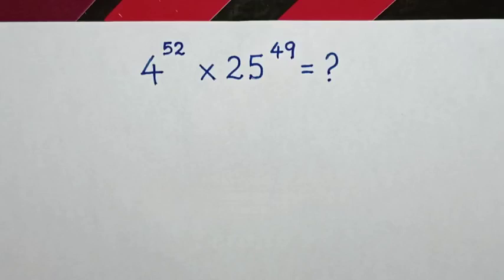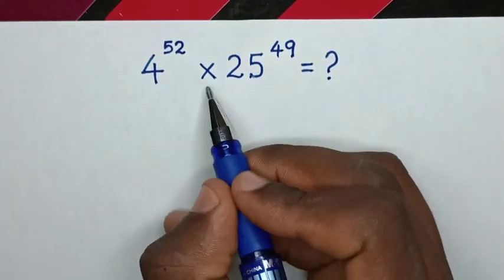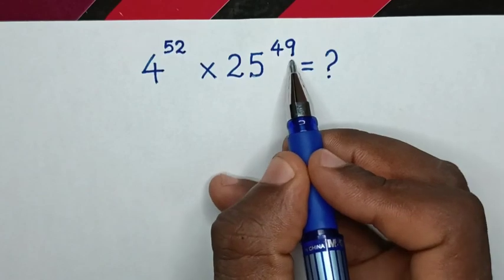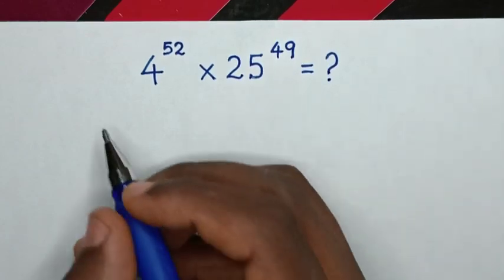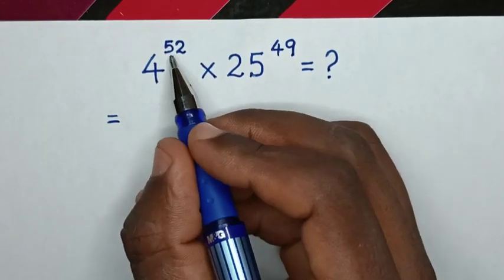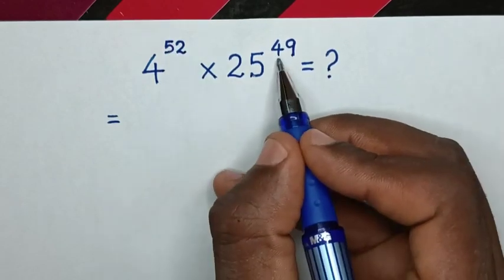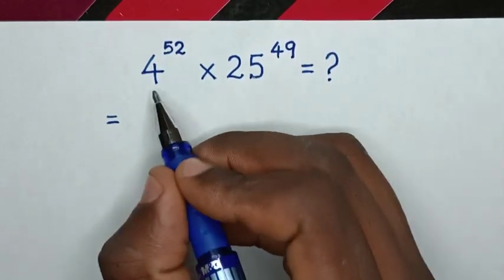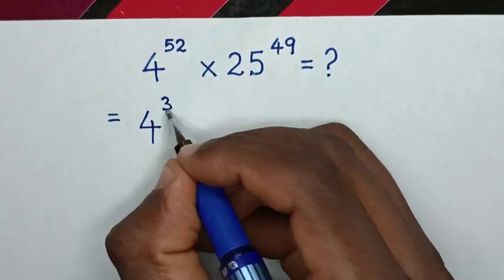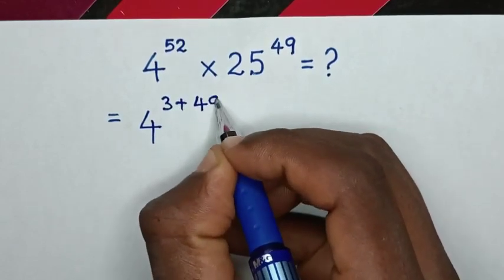Hello! How to solve 4 power of 52 times 25 power of 49? So this will be equal to — from 4 power of 52, to have a common power of 49, this is the same as 4 power of 3 plus 49.